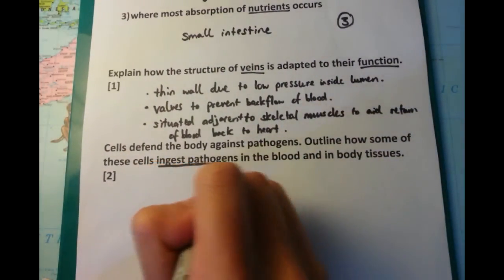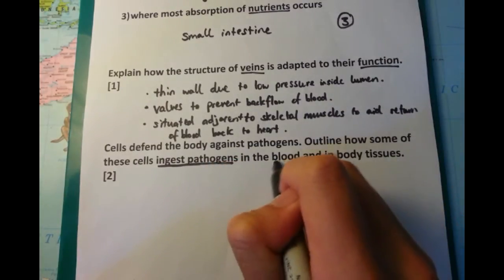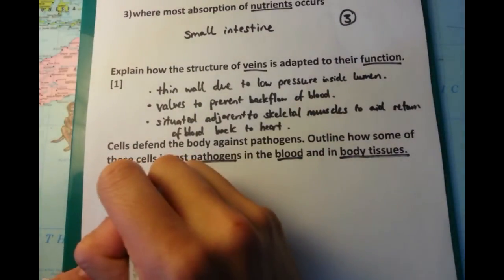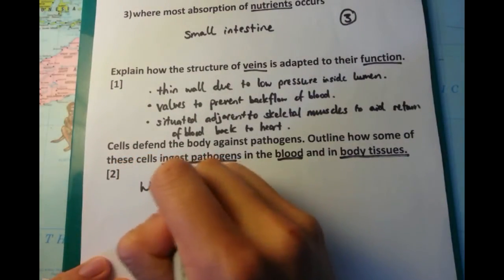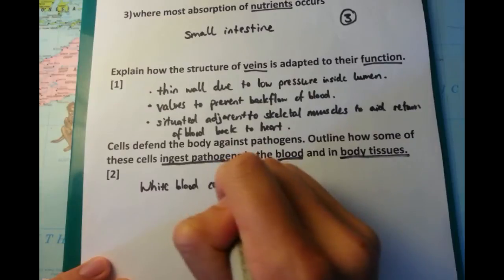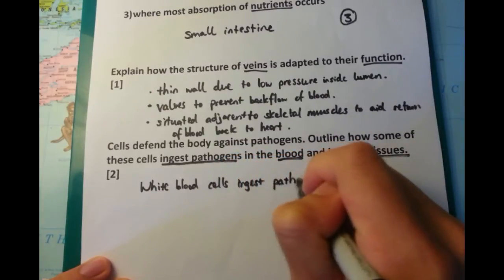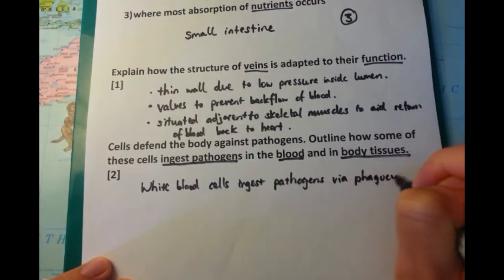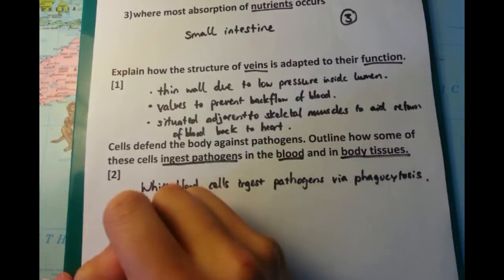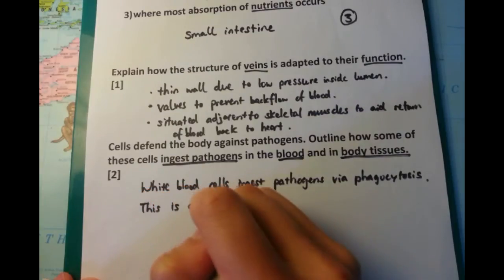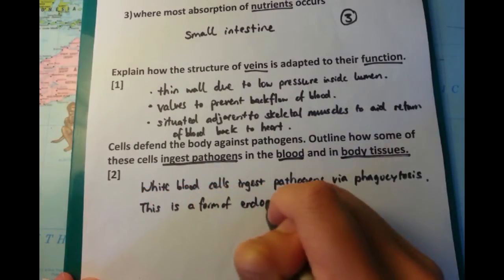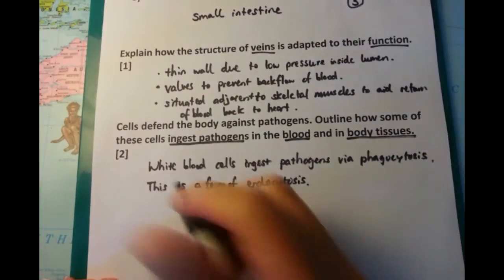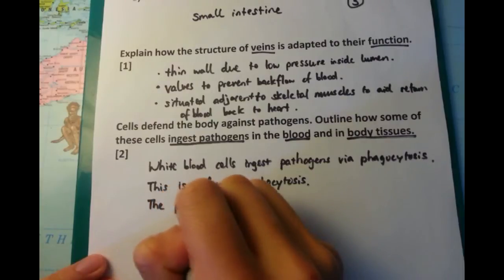The next question is a two-mark question, but I'm going to write quite a few more points — feel free to pick and choose which points you'd like to get the maximum number of marks. Outline how some cells ingest pathogens in the blood and in body tissues. The cells that ingest pathogens are the white blood cells, and they ingest via a process called phagocytosis. Phagocytosis is a form of endocytosis.